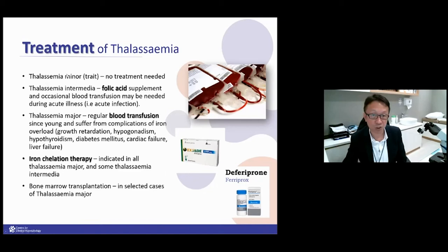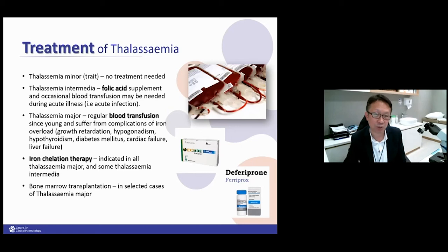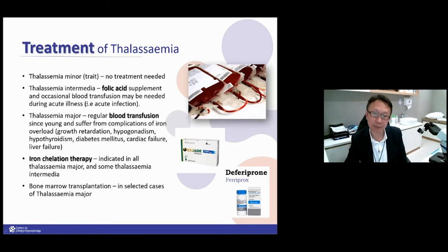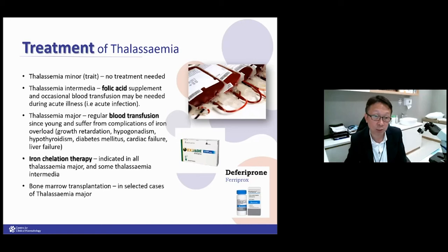The treatment for thalassemia: if you are a trait or minor, no treatment is needed. Most of these patients live a normal life, though the concern is their offspring — they should ideally marry a non-thalassemia partner. Thalassemia intermediate patients have hemoglobin ranging between 7–9g, compared to a normal of 13g. Thalassemia major patients can have hemoglobin as low as 4–5g, requiring regular transfusions, which leads to iron overload.